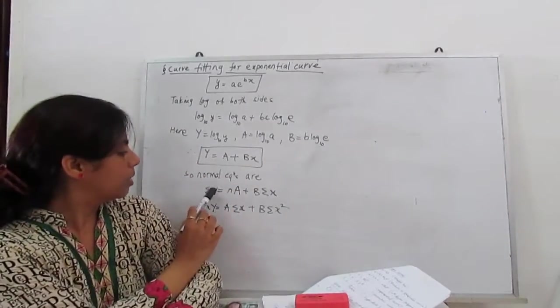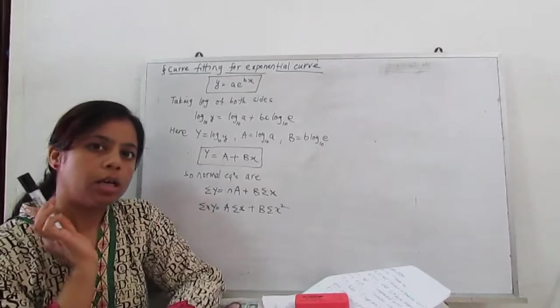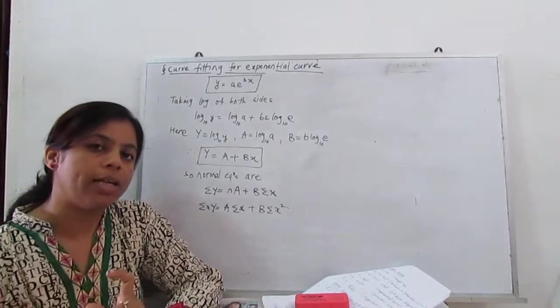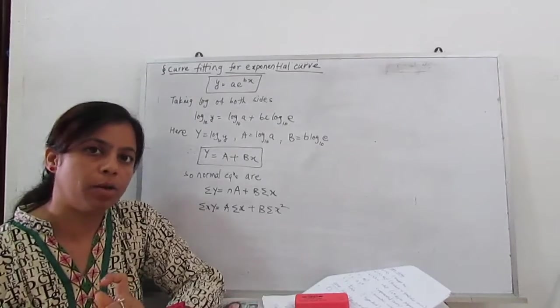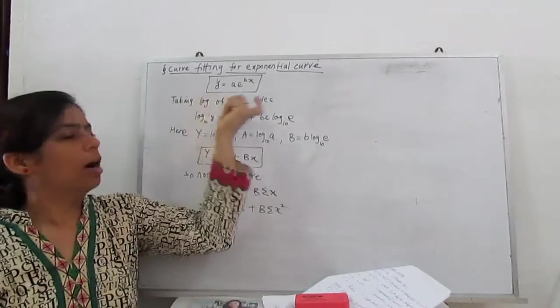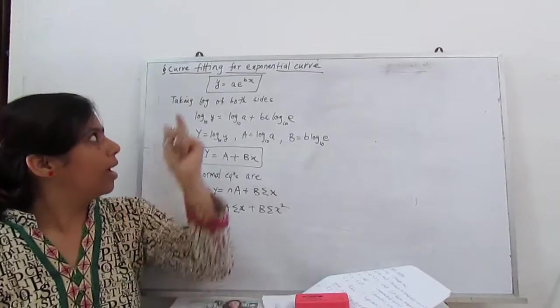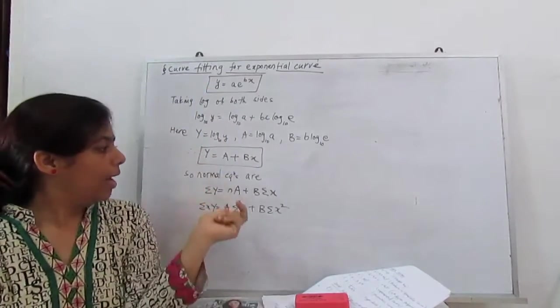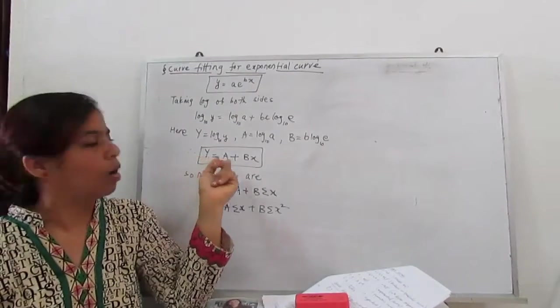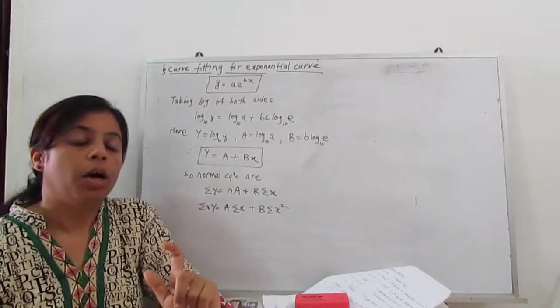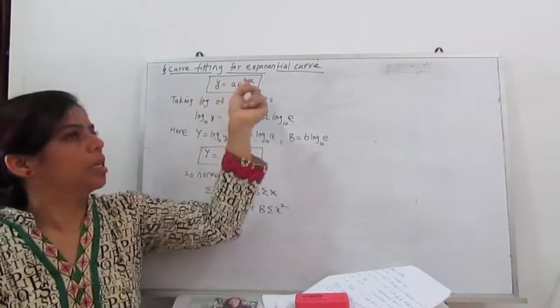So for this curve of the straight line, our normal equations are summation Y. Always remember the notation, it is capital or small because if you write at the place of capital Y, you write the small y, curve is entirely changed because the small y is original.